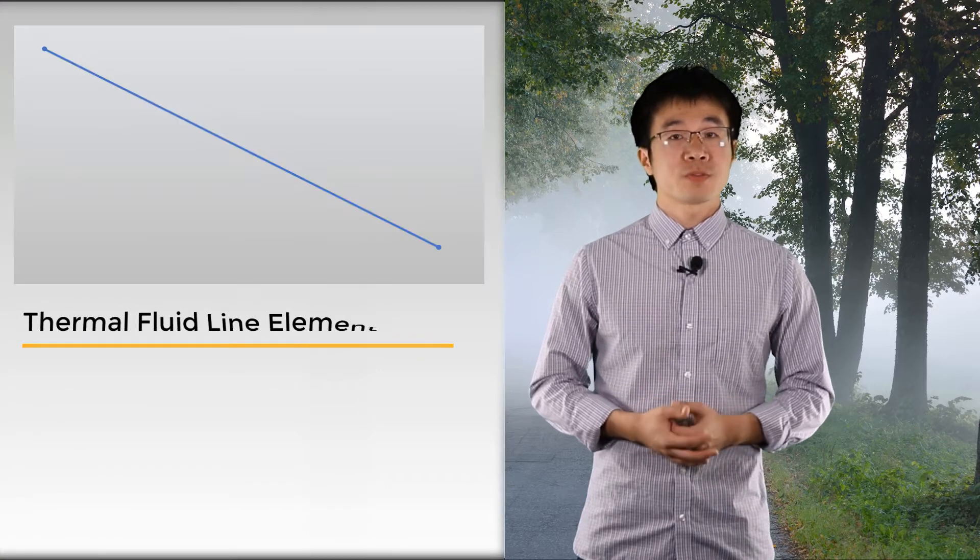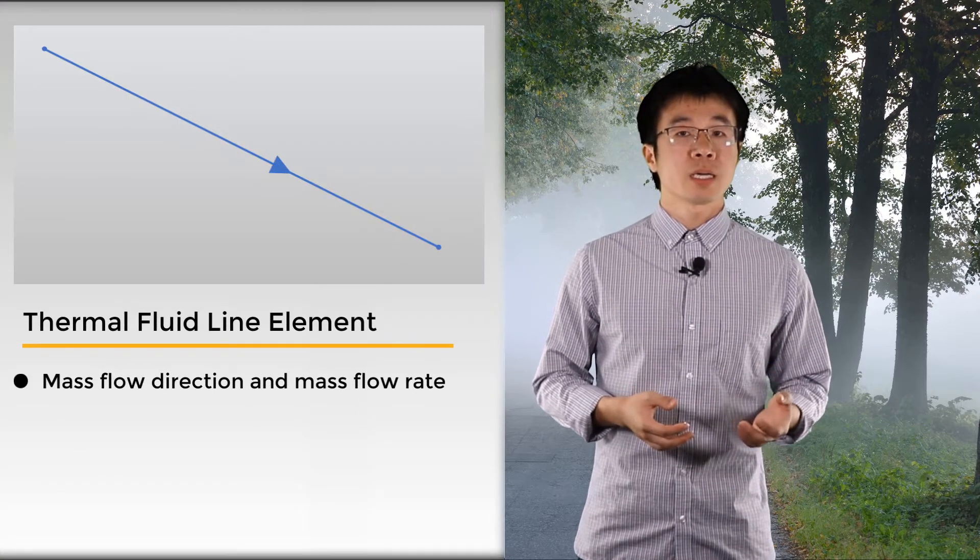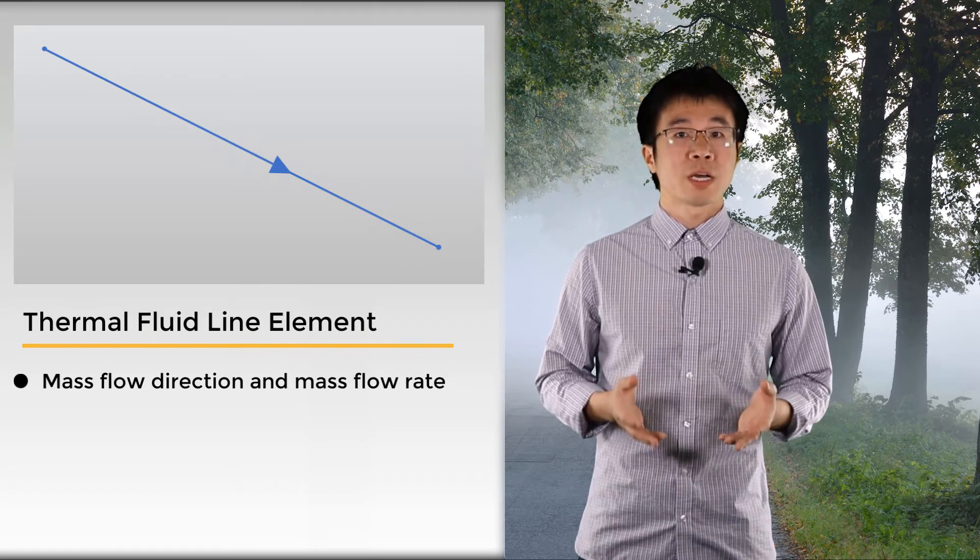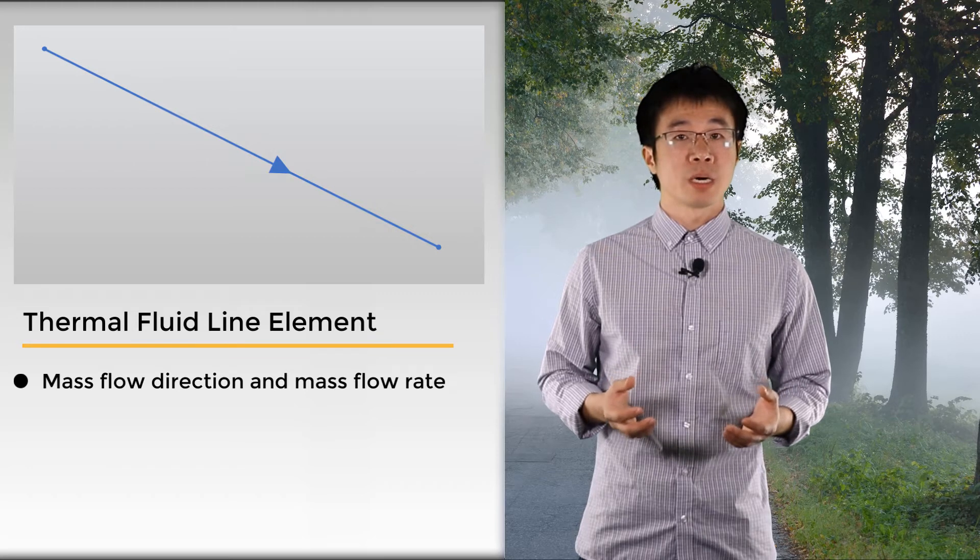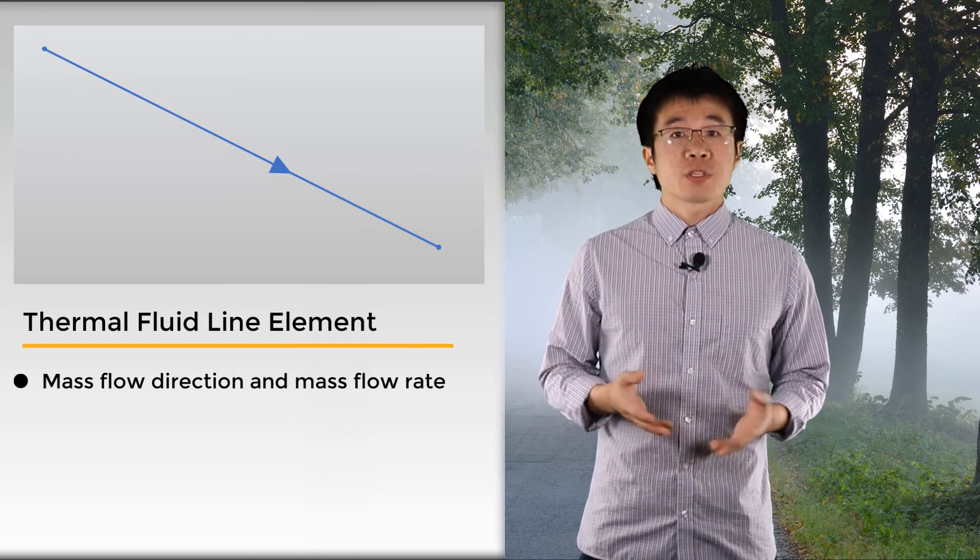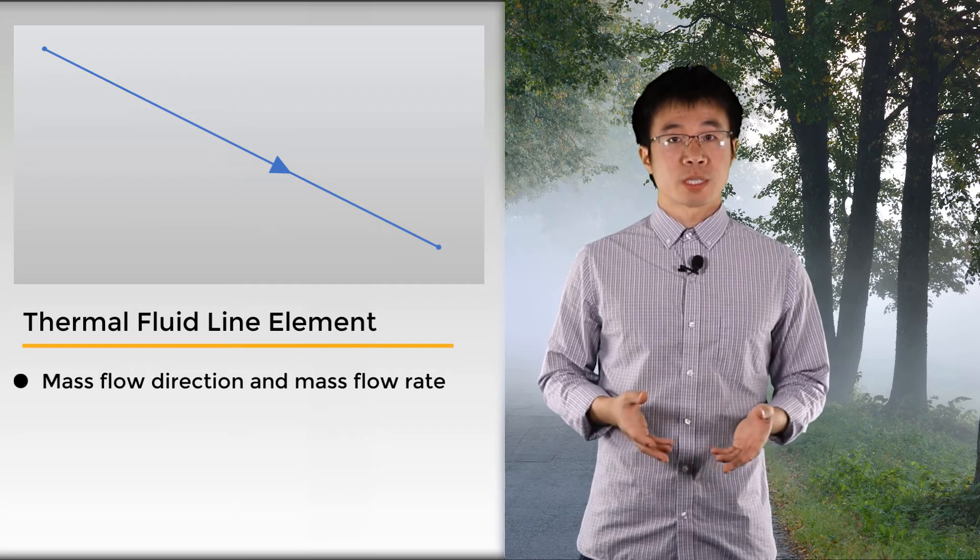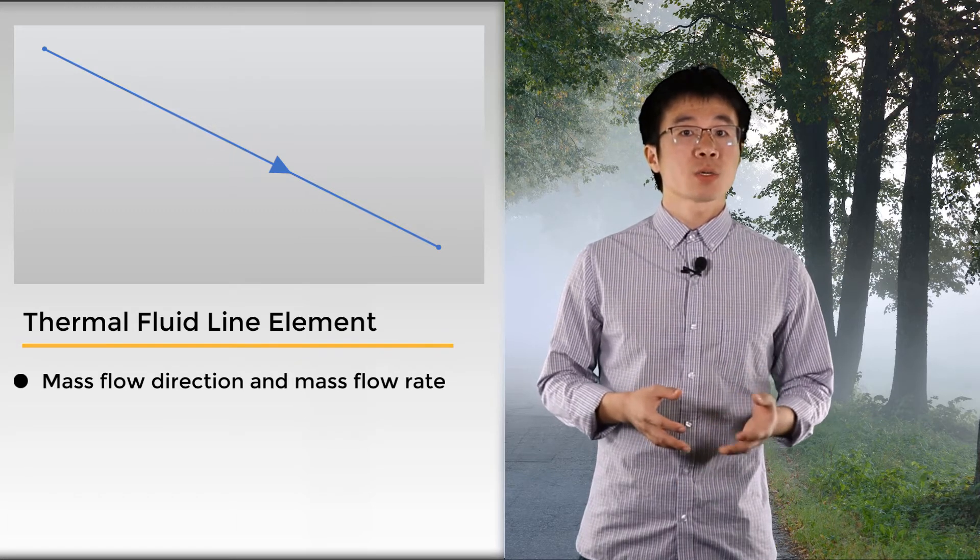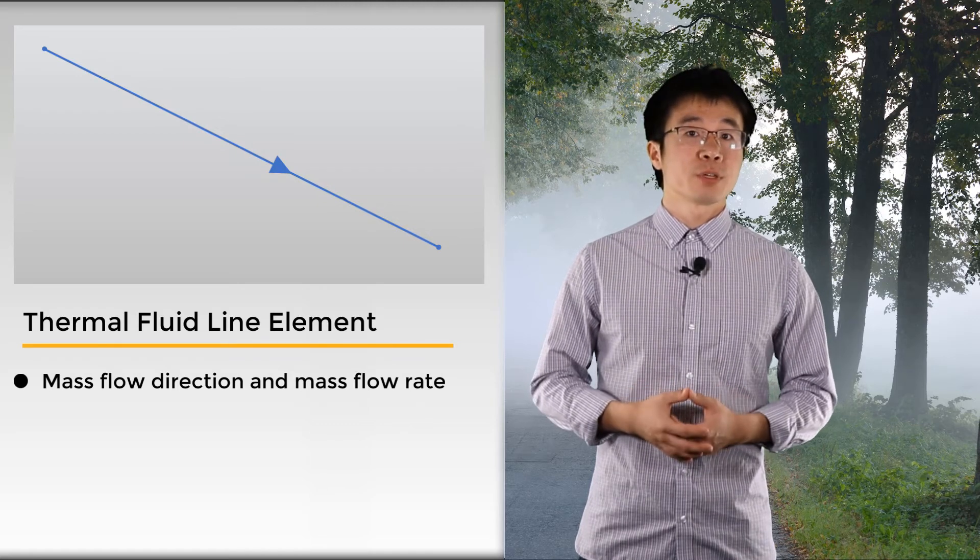A thermal fluid line element can be used in both steady state and transient thermal analysis. In either of the simulations, the following inputs need to be provided for the fluid line element. The first one is the mass flow direction. This is controlled by the line orientation in the geometry properties. It's important to make sure the flow direction of connecting fluid line bodies do not conflict. After making sure the mass flow direction is correct, we will need to define the mass flow rate. Its unit is kilogram per second.